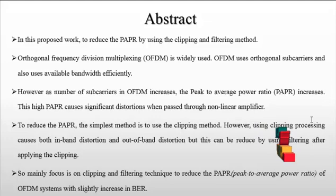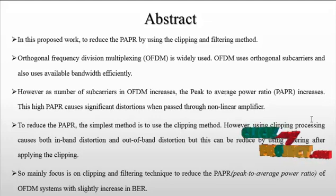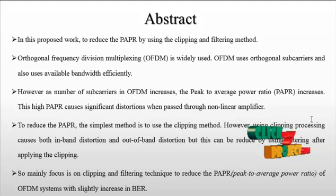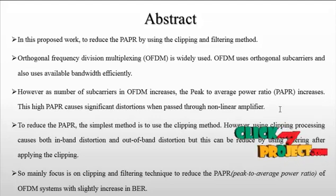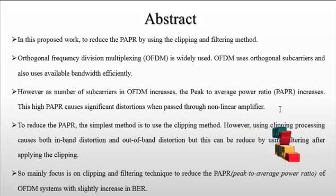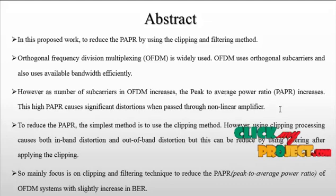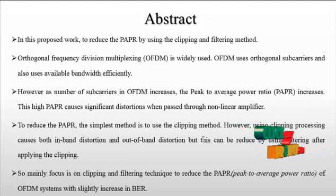However, using the clipping process causes both in-band distortion and out-of-band distortion. This can be reduced by applying filtering after clipping. The main focus is on the clipping and filtering technique to reduce the PAPR — that is the peak to average power ratio — of the OFDM system, with a slightly increased PER.